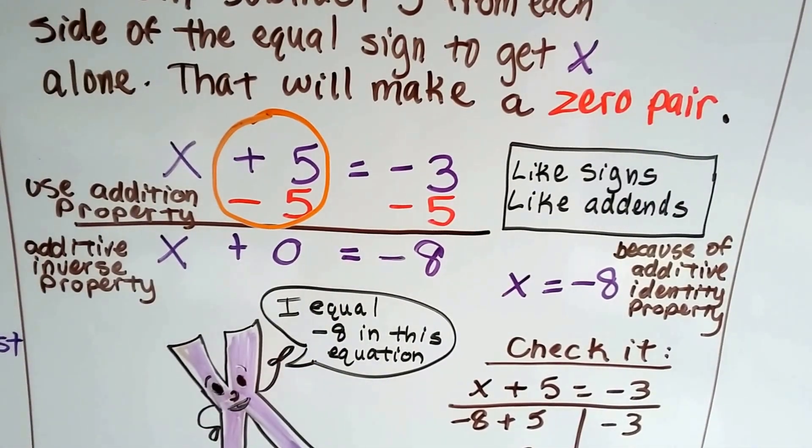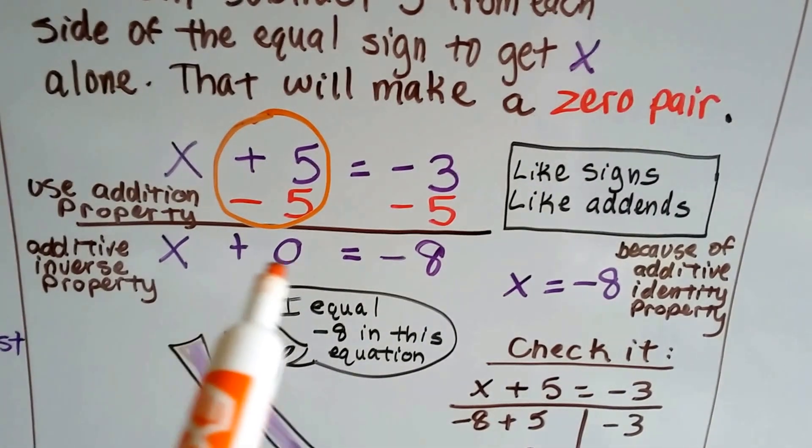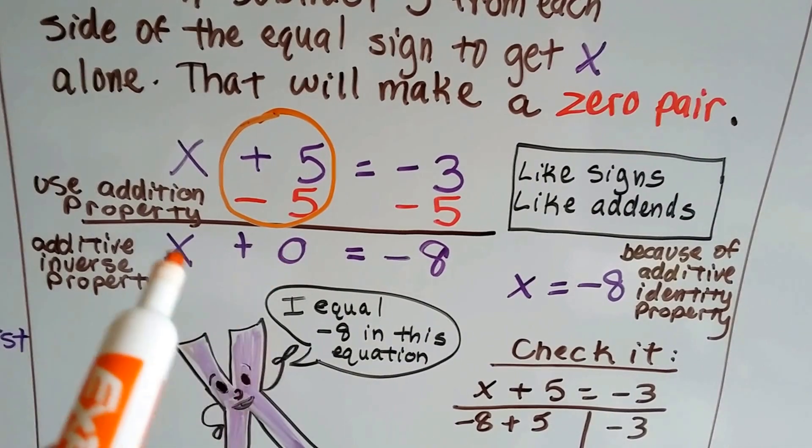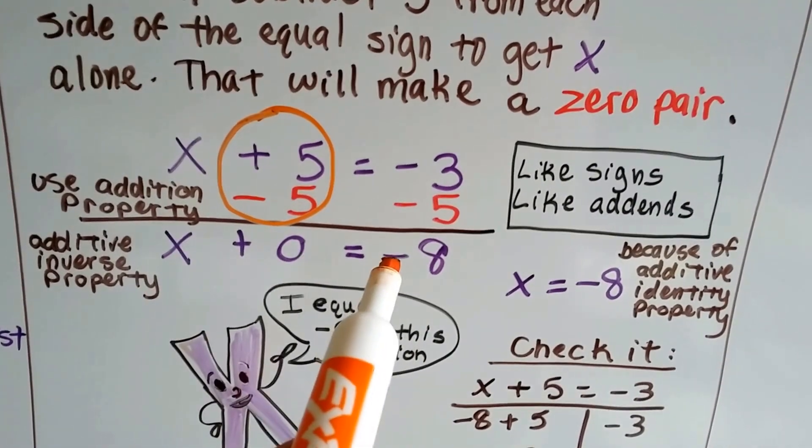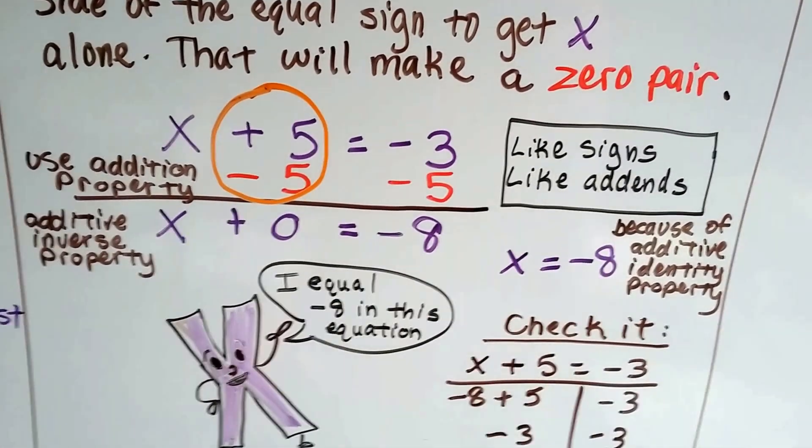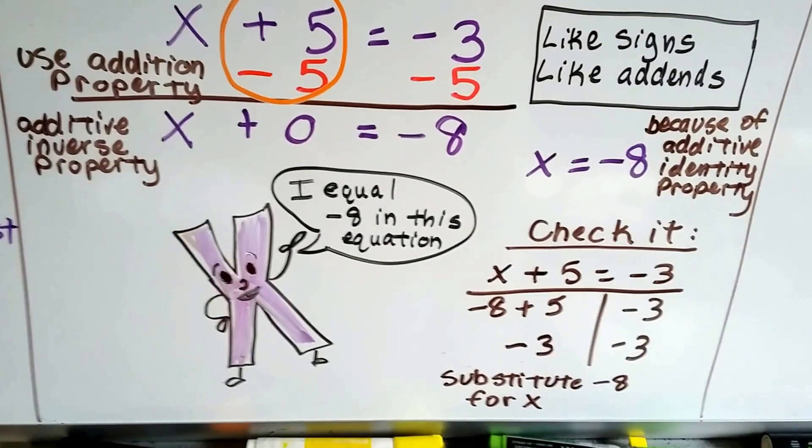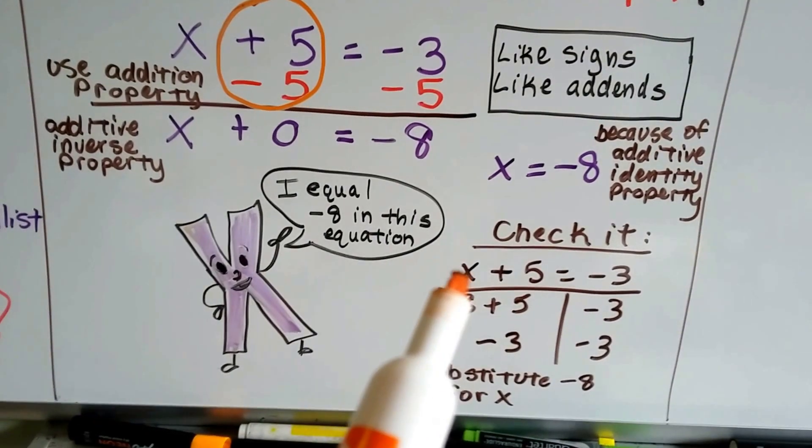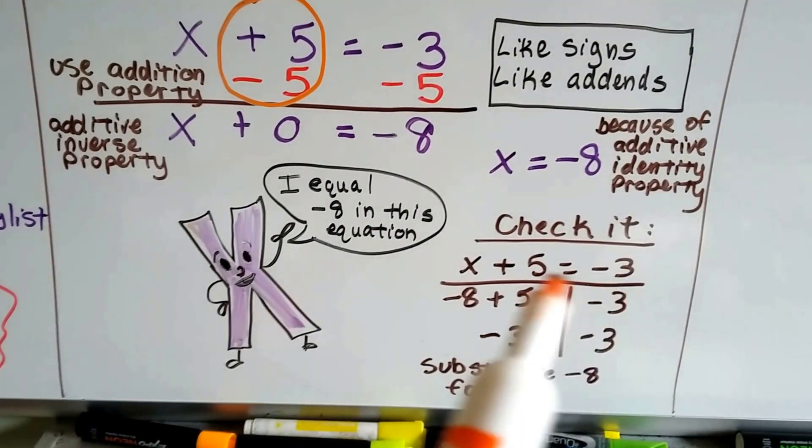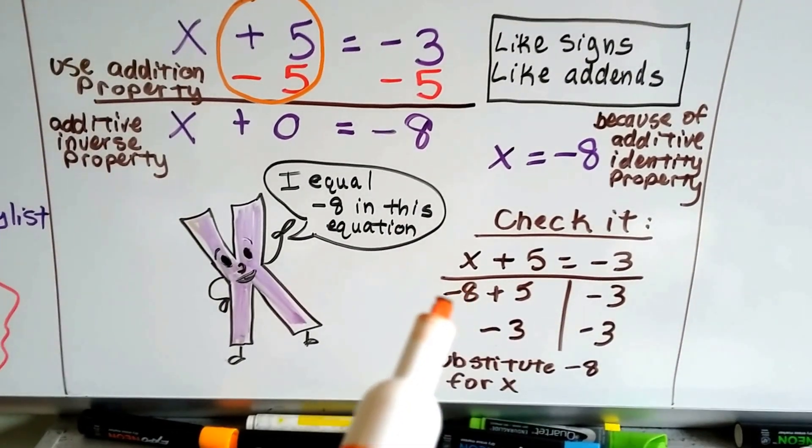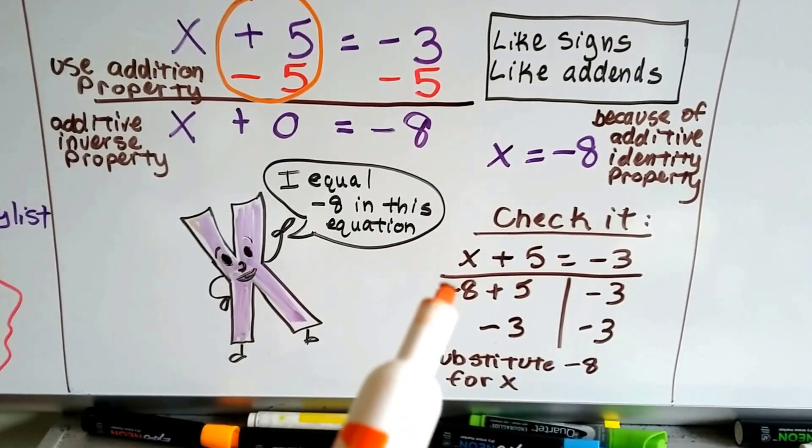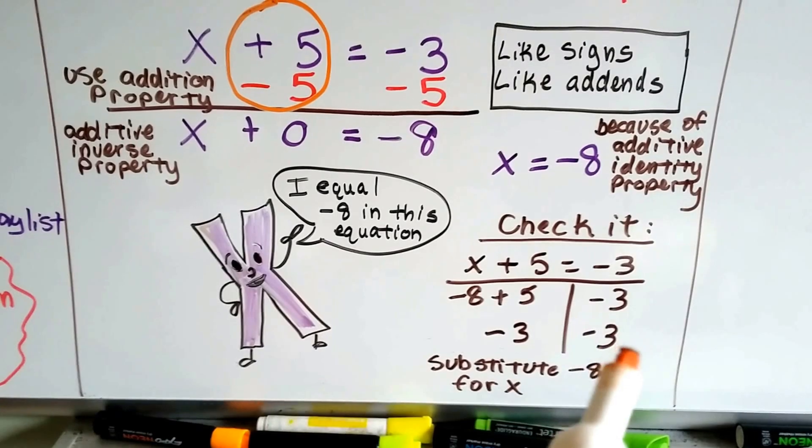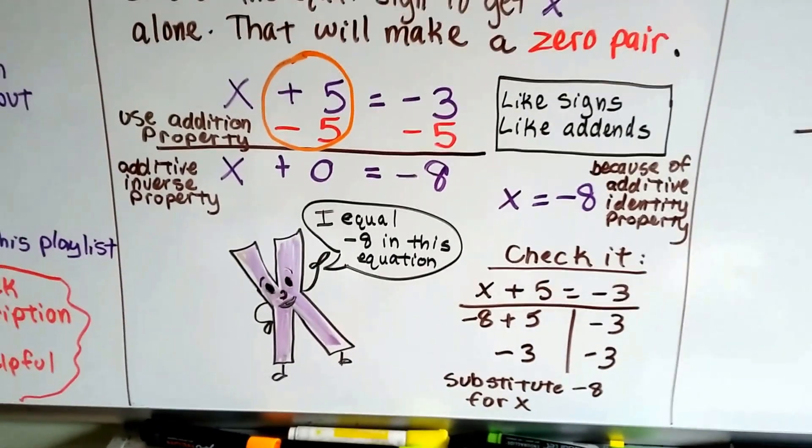So because of the additive identity property, it's going to keep its identity when it's added to zero, isn't it? So it's going to stay x, and x is going to be equal to negative 8. See? It's equal to negative 8 in this particular equation. Now we can check it. We take our equation, x plus 5 equals negative 3, and we plug in, we substitute the negative 8 for the x, and we see that it equals negative 3 on both sides. So we did it right.